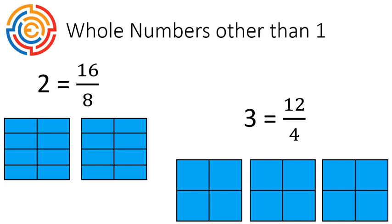You might notice that the numerator, in this case 16, is the product of these two numbers. Eight times two gives us 16. Four times three gives us 12. The numerator is the product of the denominator and the whole number we're trying to find.